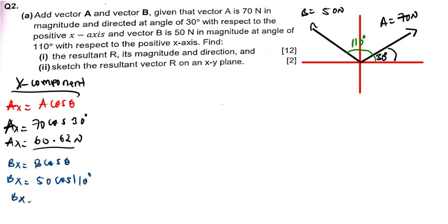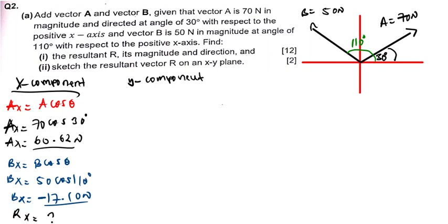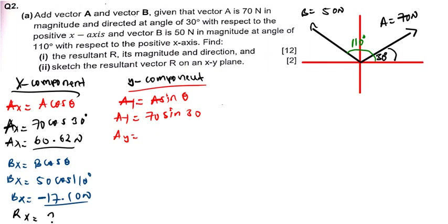Bx equals 50 cos 110, which is negative 17.10 newtons. The resultant Rx is what I want to find. Now let's resolve the vectors into their y components. Ay equals A sin theta. My A is 70 and theta is 30 degrees, so Ay equals 70 sin 30. Sin 30 is one-half, so half times 70 is 35 newtons.